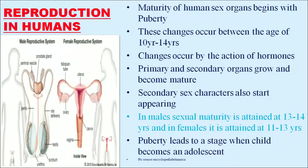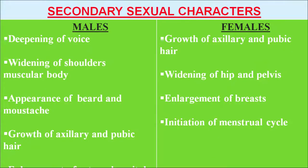Now, reproduction in humans. Maturity of human sex organs begins with puberty. These changes occur between the age of 10 to 14 years, by the action of hormones. Primary and secondary organs grow and become mature. Secondary sex characters also start appearing. In males, sexual maturity is attained at age 13 to 14 years, but in females it is earlier — attained at 11 to 13 years. Puberty leads to the stage when a child becomes an adolescent.